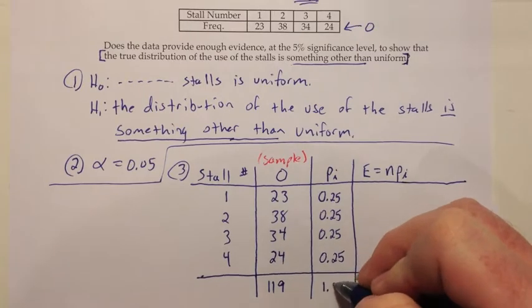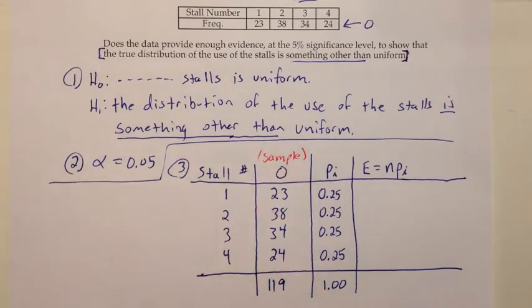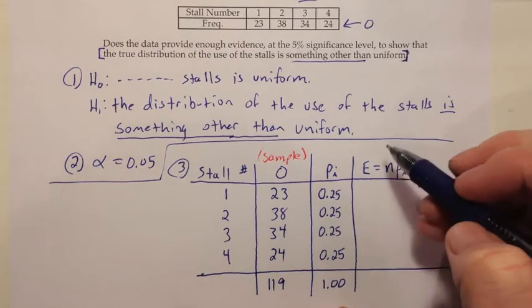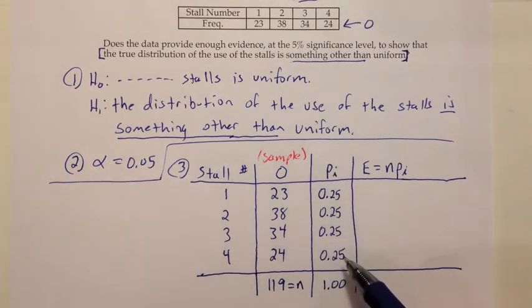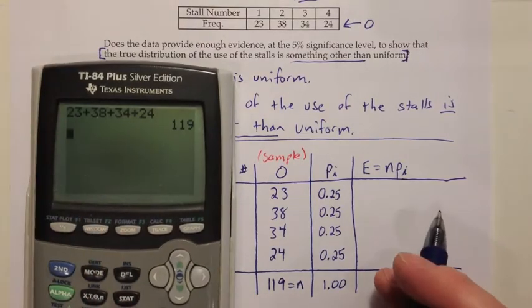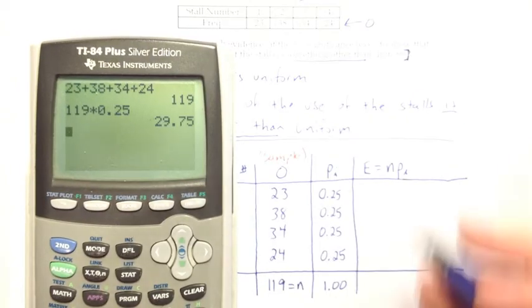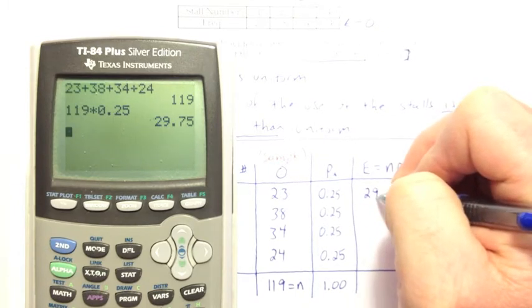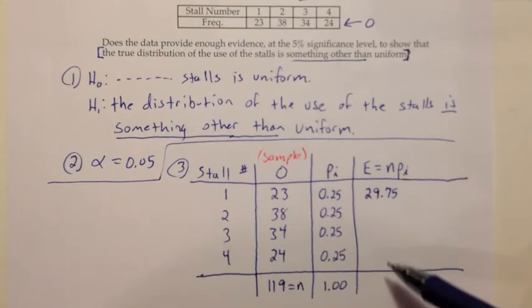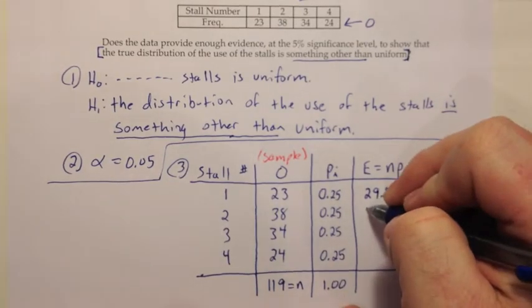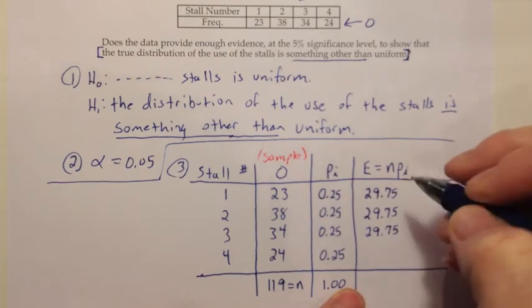Again, uniform means everything has the same height. And in this case, that would mean everything has the same probability. Now your values of PI, if you want to do the check on your work there, should add up to one. And then when you start doing the values of E, you're supposed to take N times PI. Well, N is the total number of things in your sample. And then these are the values of PI. And since these are the same, all the expected frequencies would be the same. So to get this value, I just want to take that 119 I got a moment ago, multiply that by 0.25, and I get 29.75. And if the distribution was really uniform, we expect the same amount in every stall. And that same value of P will produce the same value of E in every one of these settings.